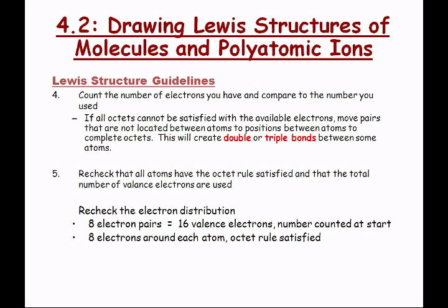Then put the oxygens around that carbon. There are only three oxygens, so we can only put them on three sides. Now ask yourself: how many valence electrons does oxygen have? Six. All three oxygens each have six valence electrons, so draw those: one, two, three, four, five, six — for each oxygen.